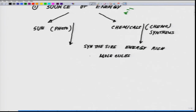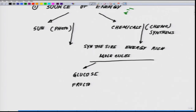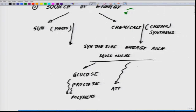When we talk about synthesizing energy-rich molecules, we talk about molecules like simple sugars such as glucose and fructose and their individual polymers. Similarly, we talk about energy-rich molecules like ATP, which is the key currency of energy to run biological systems.